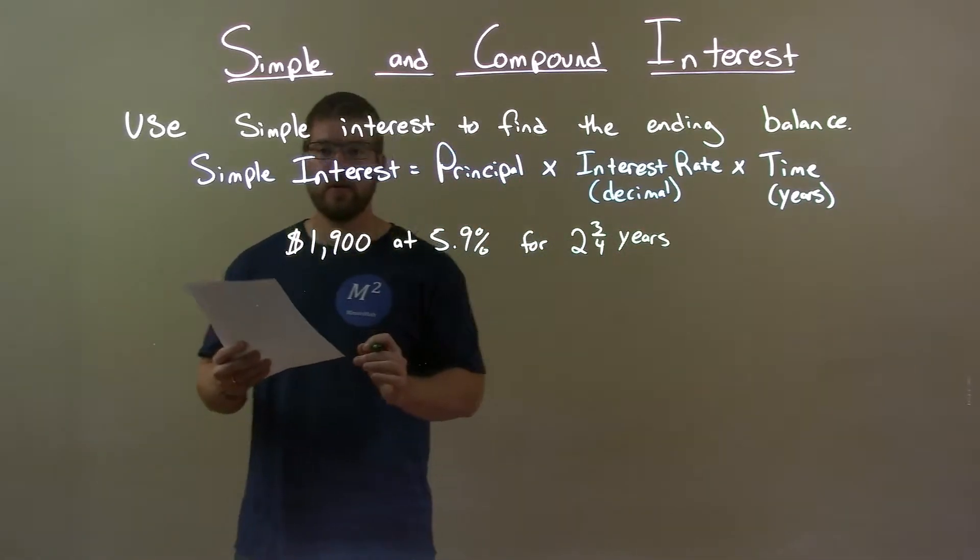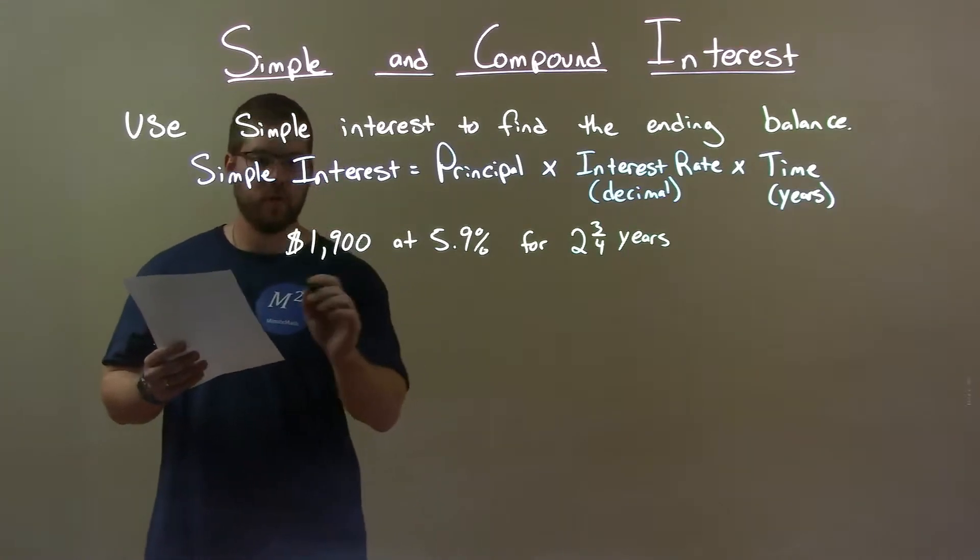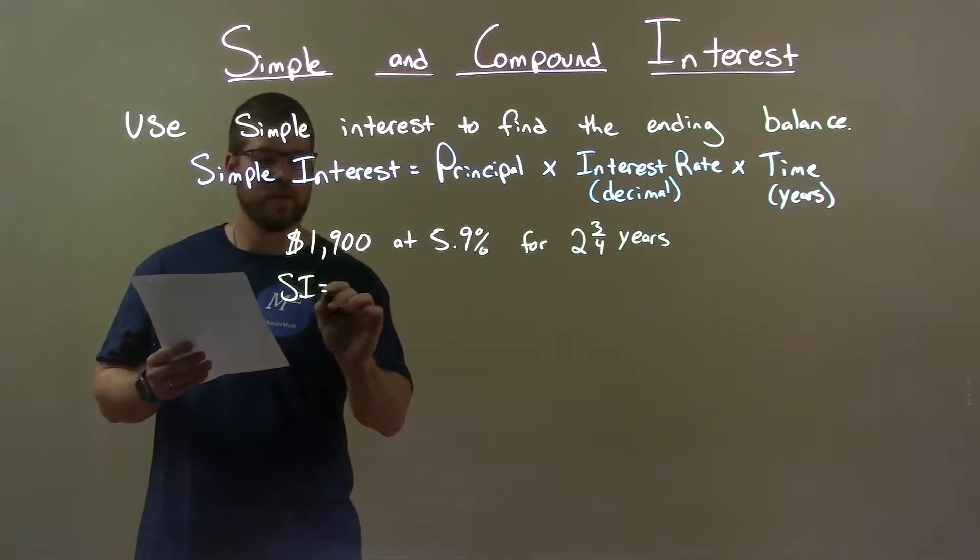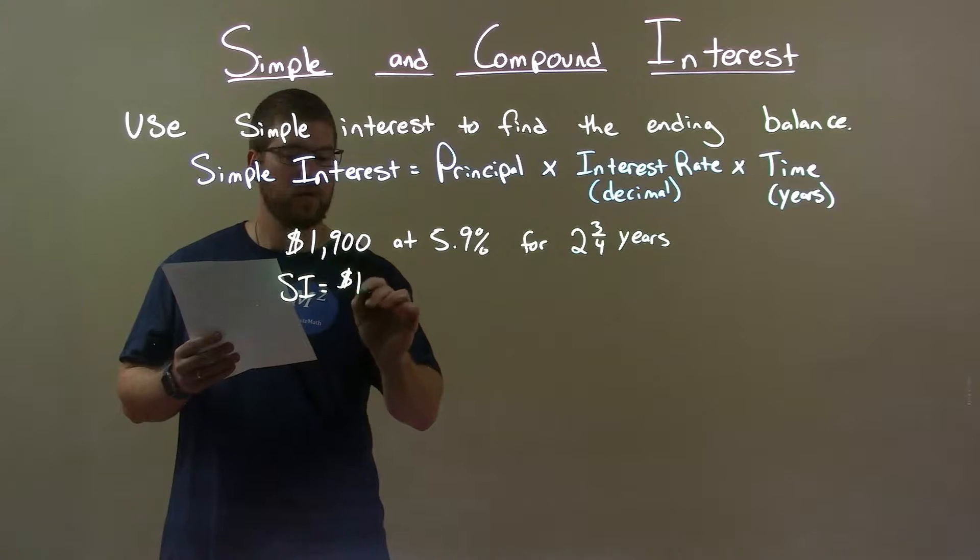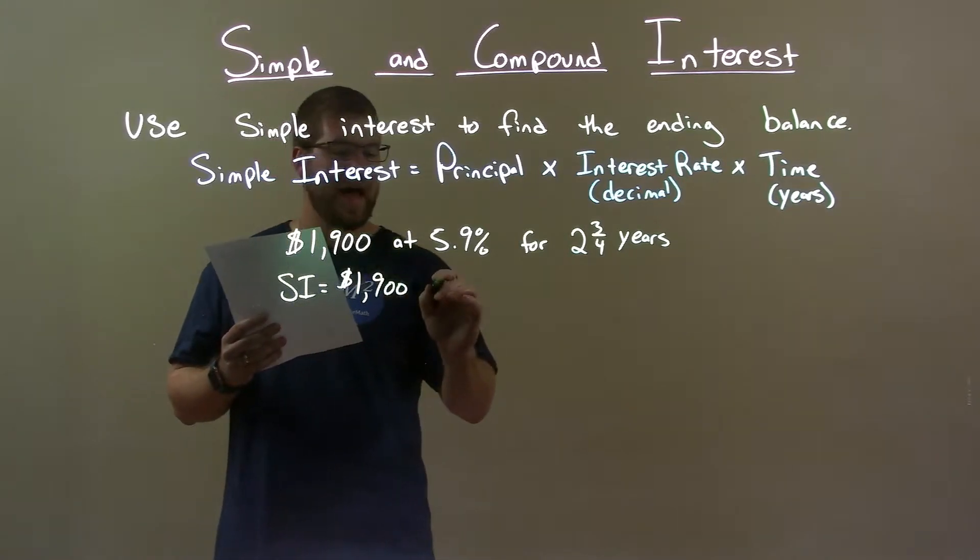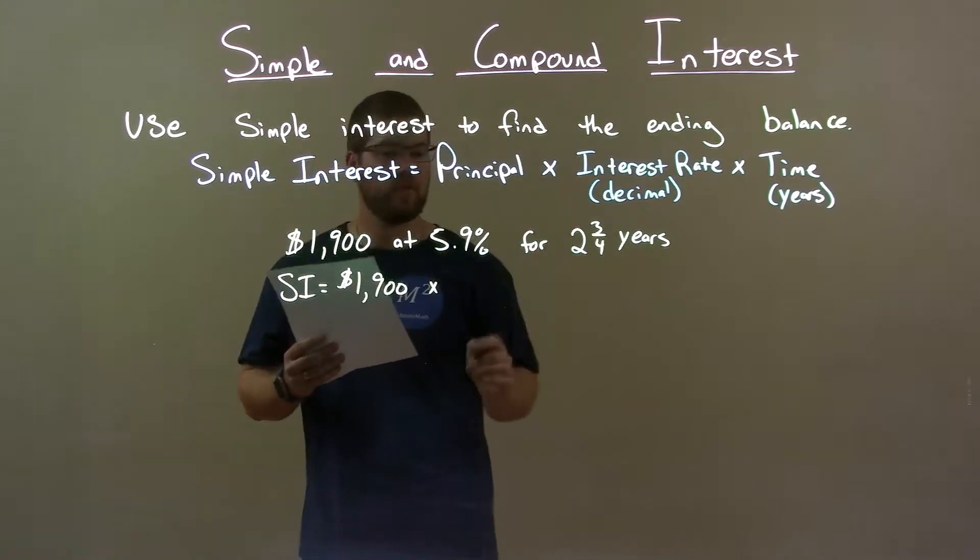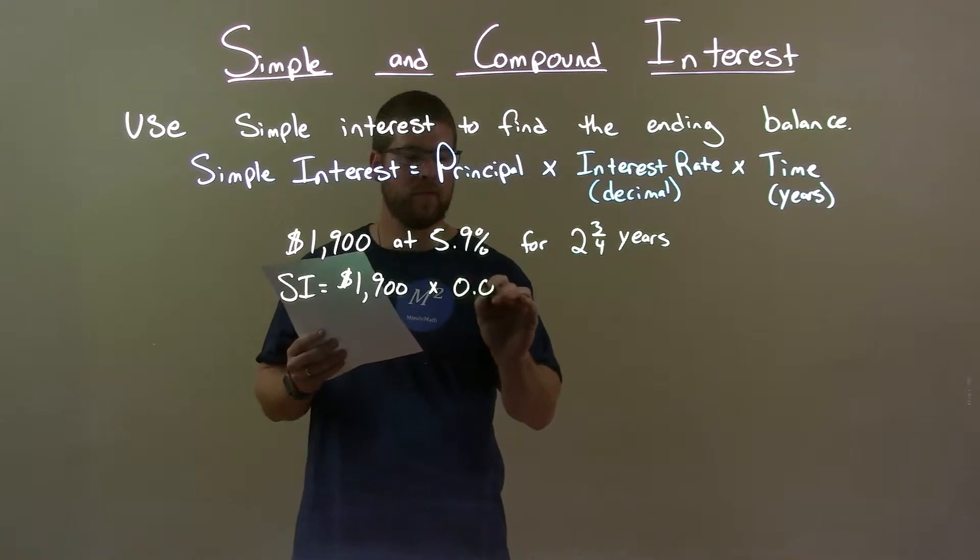First thing I want to do is use my simple interest formula. Simple interest is equal to my principal, 1,900, multiply that by my interest rate as a decimal, 0.059.